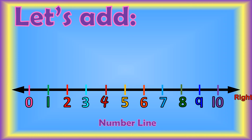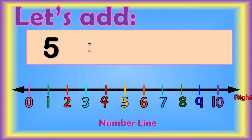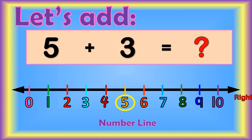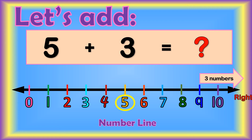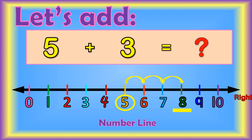We can carry out addition using a number line. To find the sum of 5 plus 3, we start from the bigger number, which is 5, and jump 3 numbers to the right: 1, 2, 3. In what number did we land? The sum of 5 plus 3 is 8.